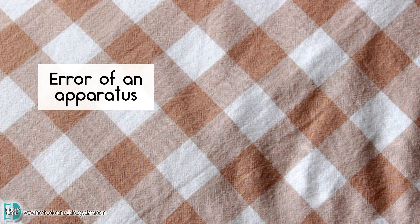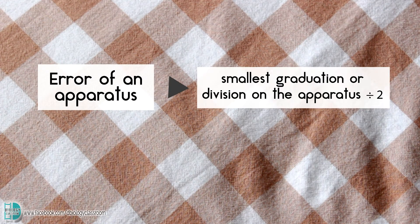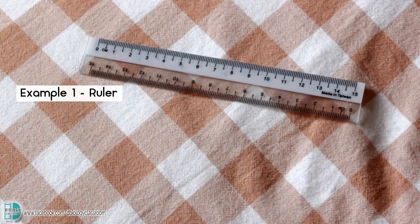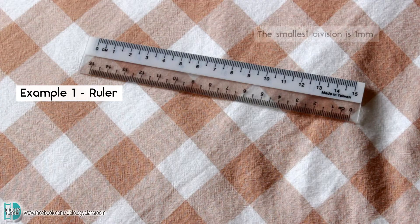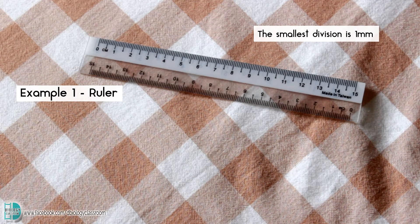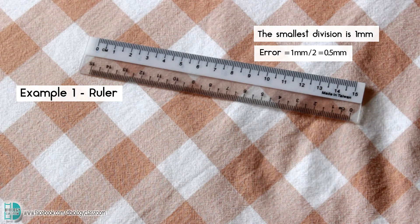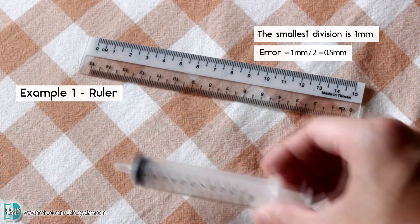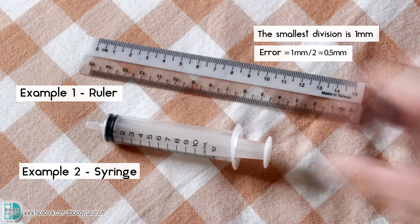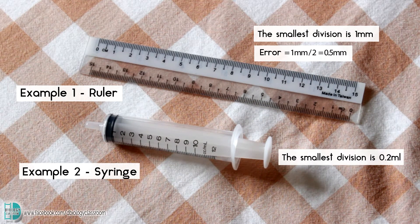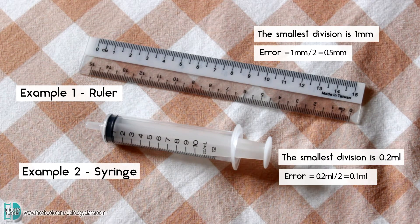For a particular apparatus, the error is half the smallest graduation or division on the apparatus. For example, when you are using this ruler to measure an image, since the smallest division is 1 mm, the error of the ruler is 1 mm divided by 2, which is 0.5 mm. Let's say you are using this syringe to measure the volume of a liquid — its smallest graduation is 0.2 mm, so the error is 0.1 mm.